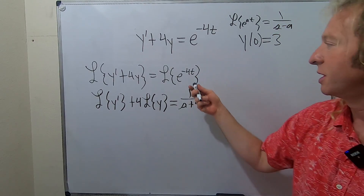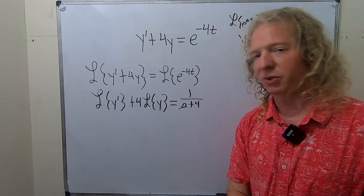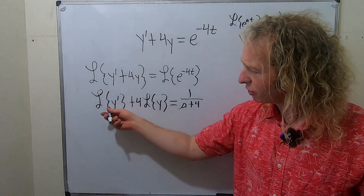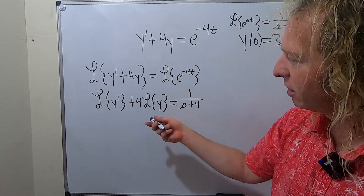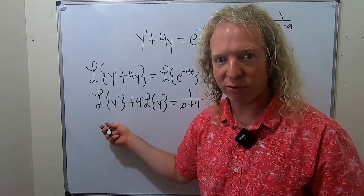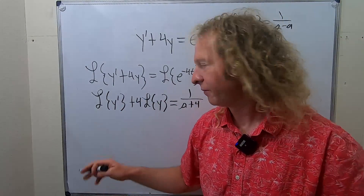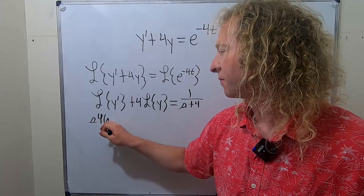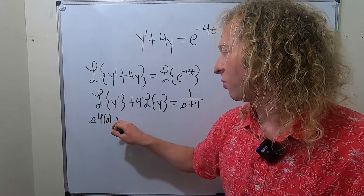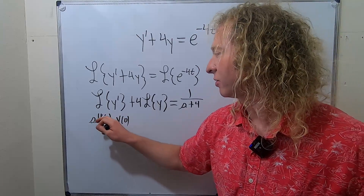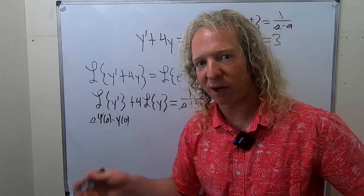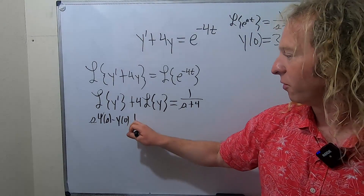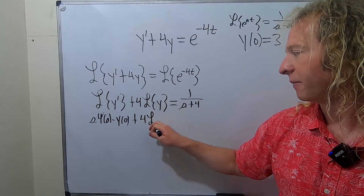In this case, your a is negative 4, so it turns into a plus. Now we use another formula: the Laplace of y prime equals s times ψ(s) minus y(0). I call it pitchfork y, but it's actually psi. And then plus 4 times the Laplace of y.